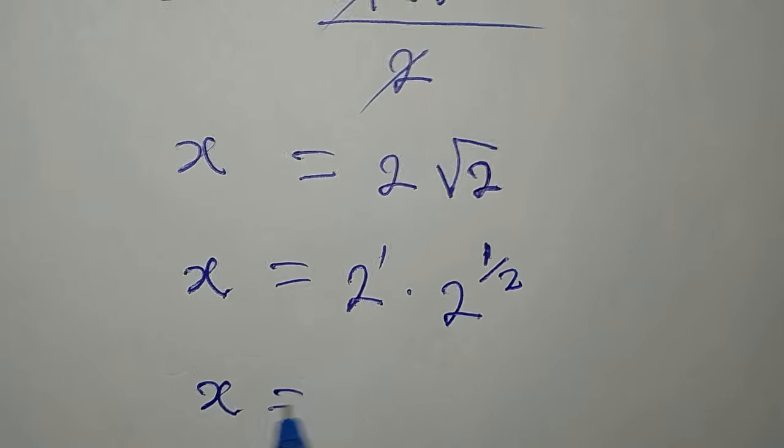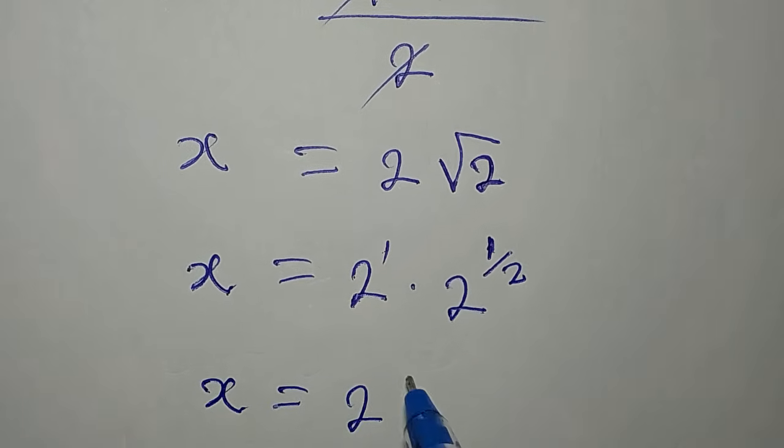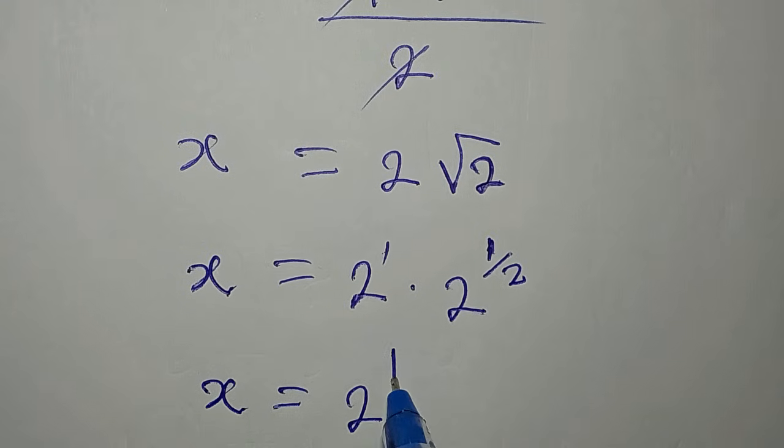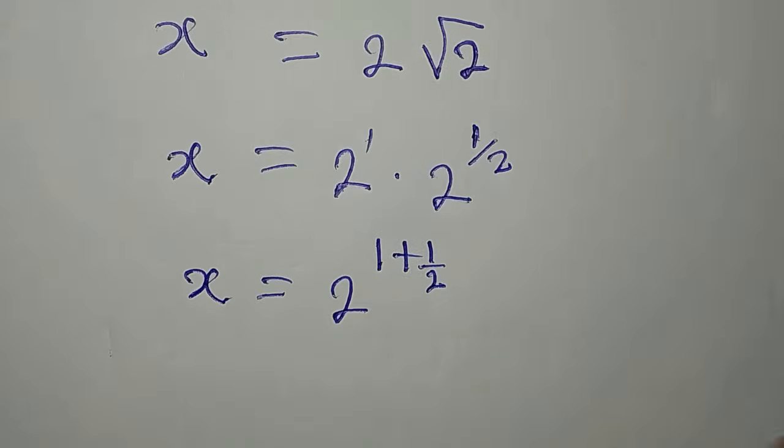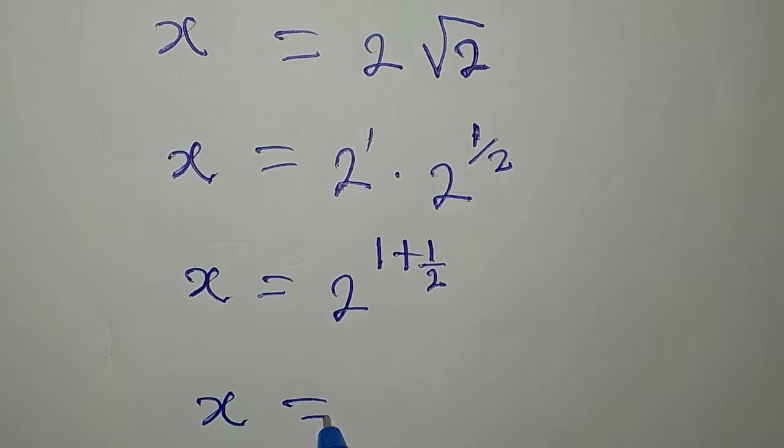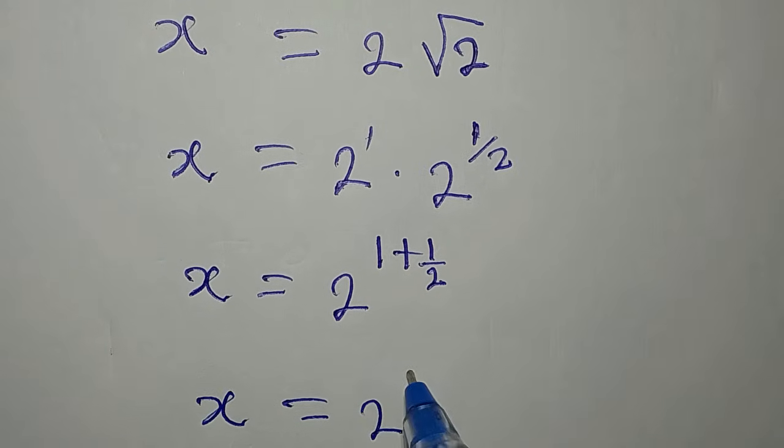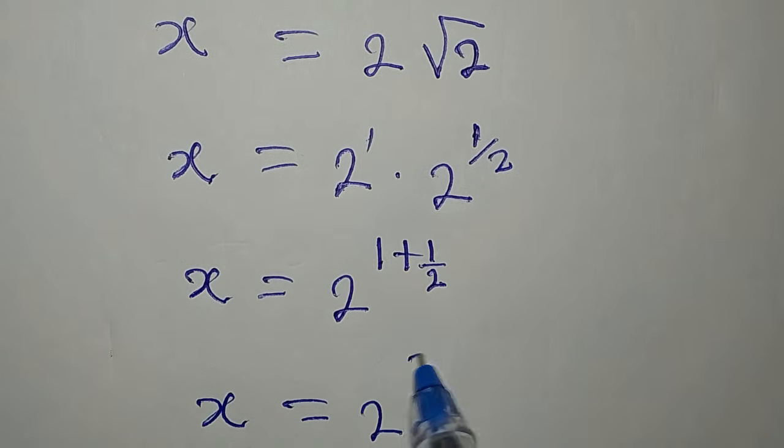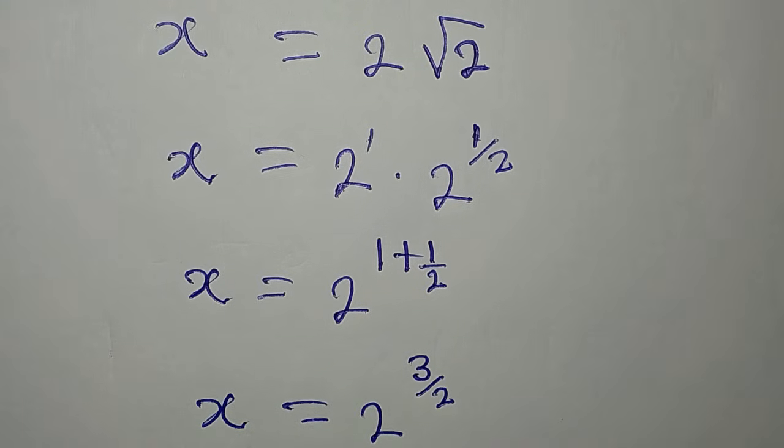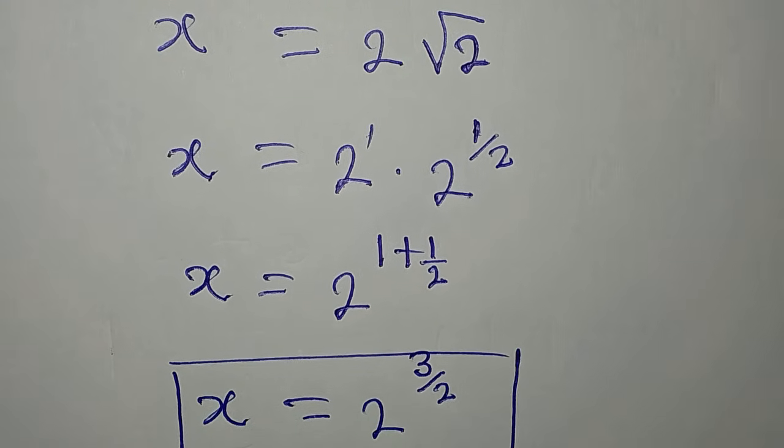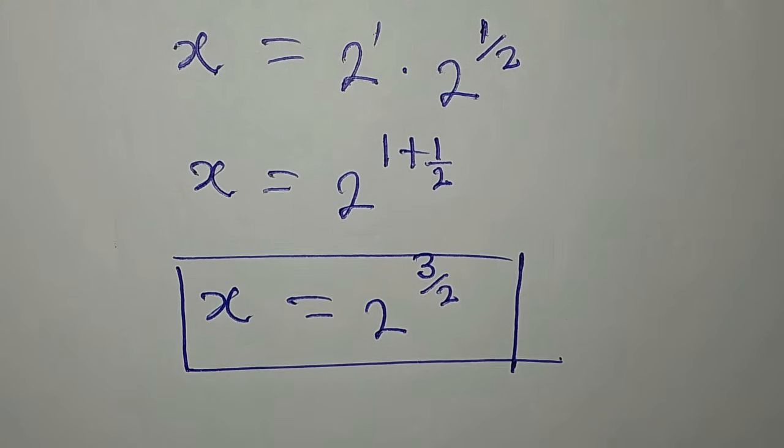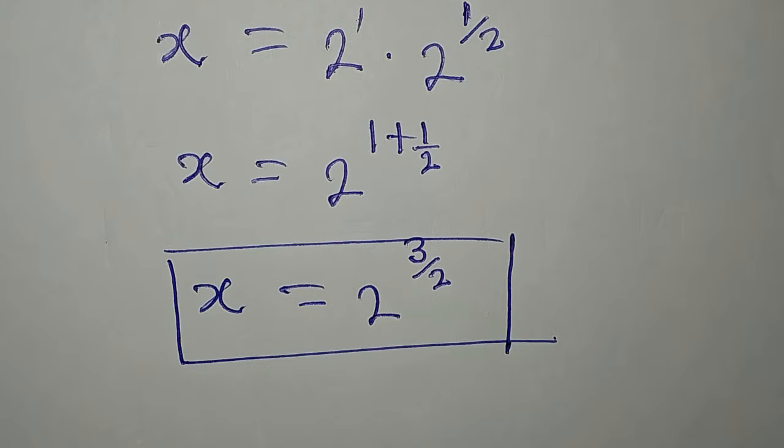Our x is equal to 2 to the power of 1 plus 1 over 2, and then this means that our x is equal to 2 to the power of 3 over 2. So this becomes the value of x. We can leave it at this. Thank you for watching.